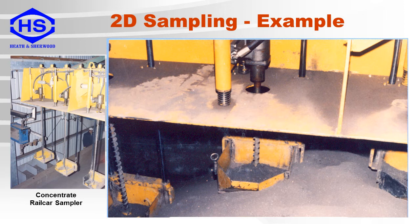This is an example of a 2D rail car sampling system. Here we have a carriage which traverses over the rail car, and a set of augers which are driven into the sample lot to extract several sample increments.